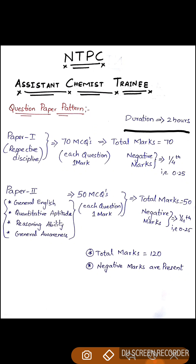The duration of the exam is two hours and there will be two papers — Paper 1 and Paper 2. Paper 1 is completely of the respective discipline, that is chemistry. Paper 1 consists of 70 multiple choice questions, all from chemistry only. Each question carries one mark and total marks are 70. There is negative marking — 0.25 marks will be deducted for each wrong answer, so be careful while attempting.